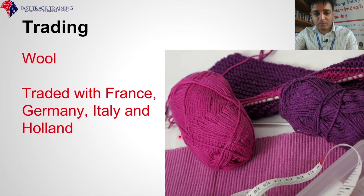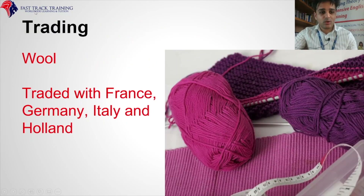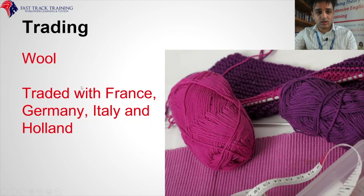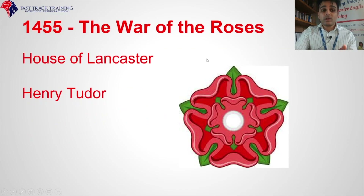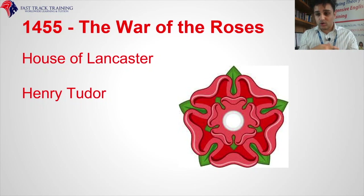Wool was traded with France, Germany, Italy, and Holland — that was the main export of England at the time. Now, the War of the Roses. A lot of people get confused between the House of Lancaster, House of Commons, House of Parliament, and House of York. Here's the simple way to remember: the red rose is the House of Lancaster, and the white rose is the House of York.